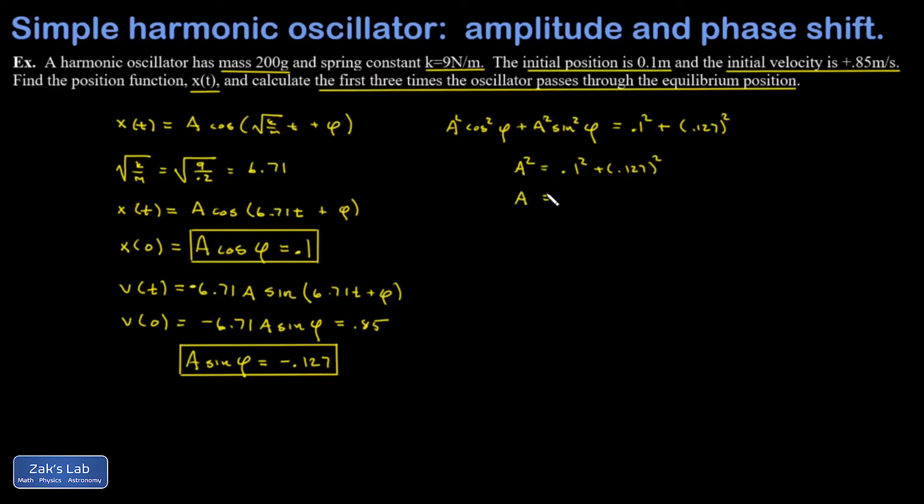Just square rooting both sides real quick. I'll keep working in decimals here. I get 0.162. And that is measured in meters. And it's actually the amplitude of the oscillations.